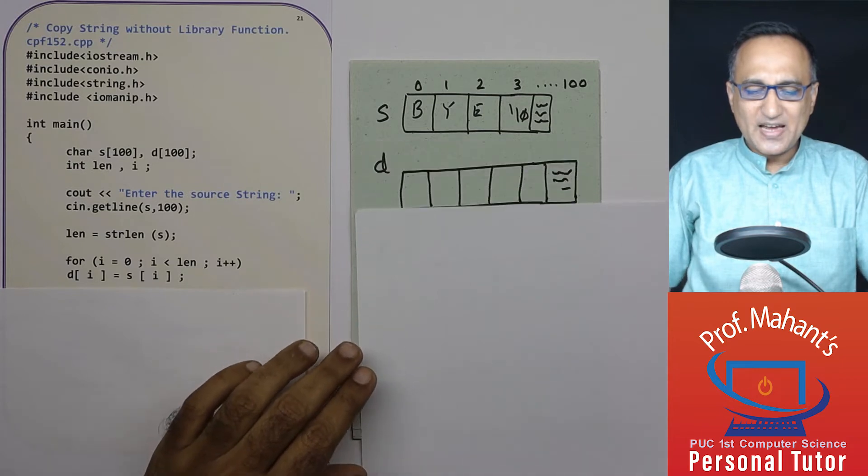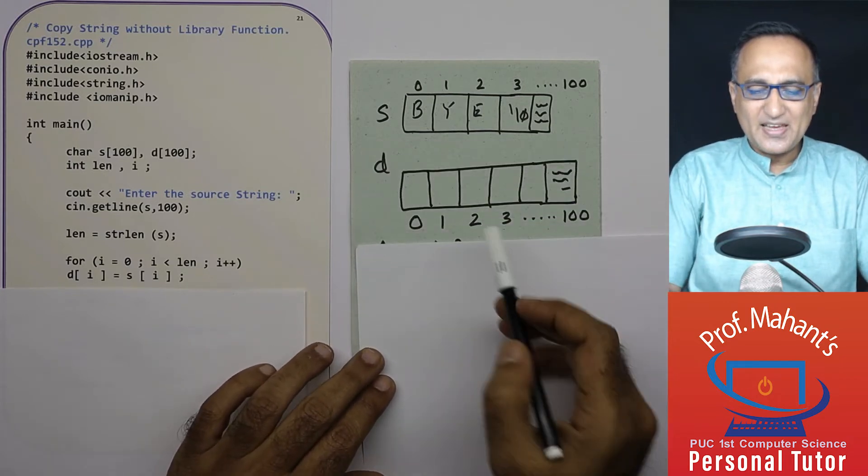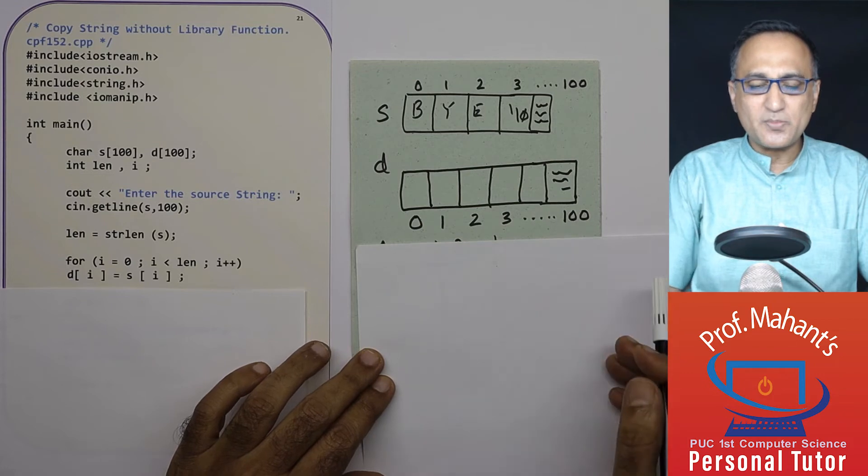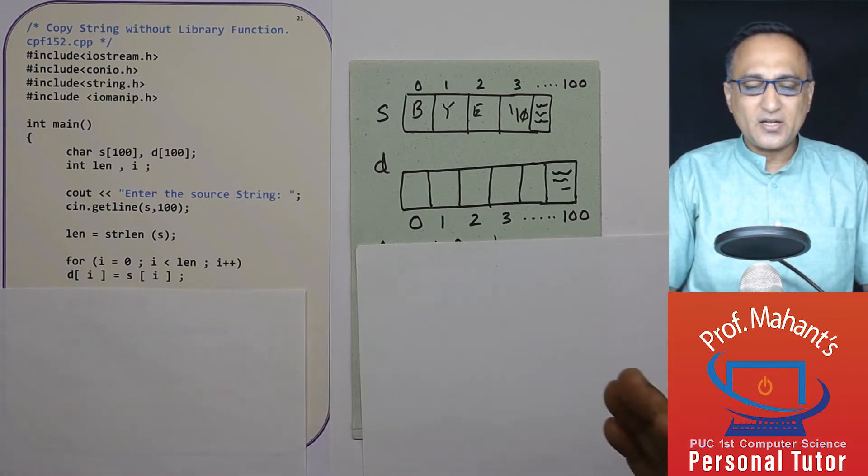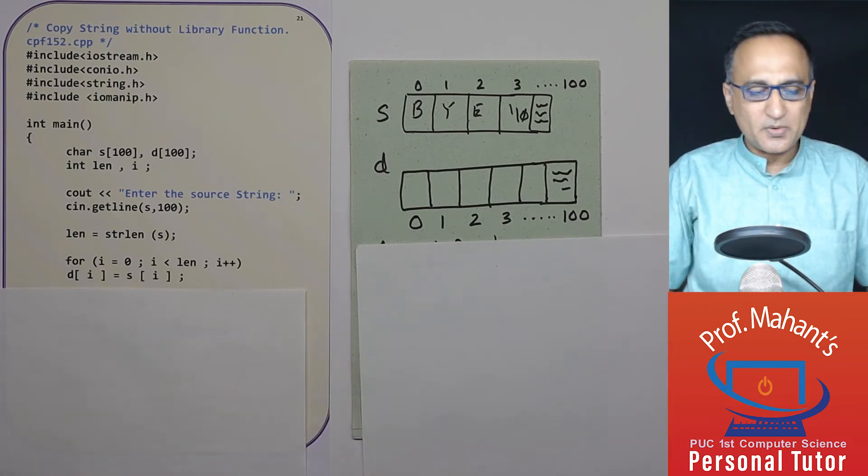I have defined a destination array with capacity 100 and I have shown some initial positions blank so that you can see what is happening when the copy is going through.